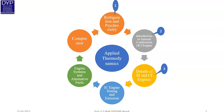The third unit covers Details of SI and CI Engines, where we will see how combustion takes place in SI and CI engines. The fourth unit is IC Engine Testing and Emission, covering engine testing and emissions. The fifth unit is Engine Systems and Alternative Fuels, and the last unit is Compressors.